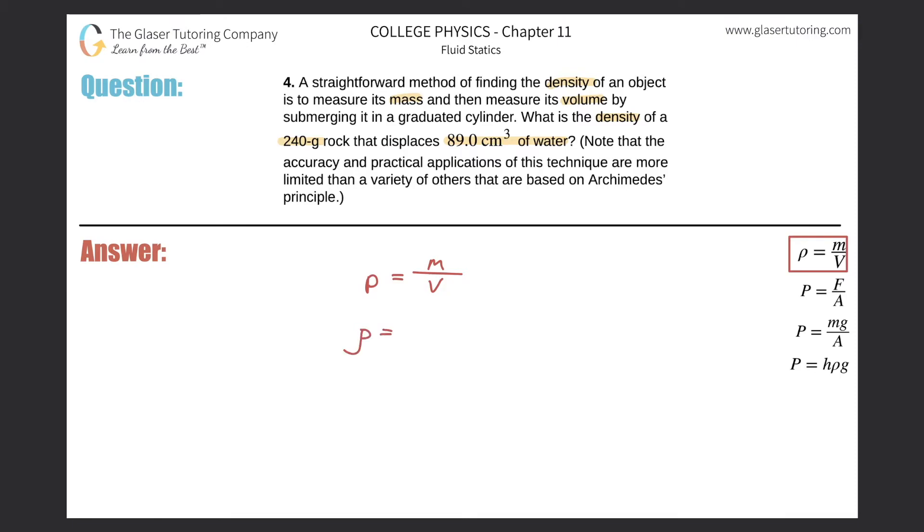So density here can be easily calculated by taking the mass of the rock. Generally, it's in grams per cubic centimeter anyway, so we don't even have to do any conversion. So we're going to take the mass of the rock, 240 grams, divide it by the 89 cubic centimeters.